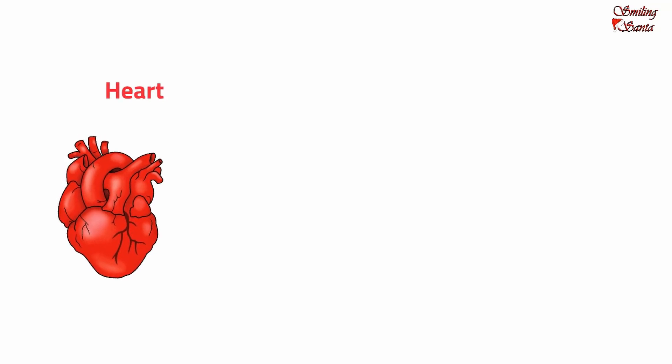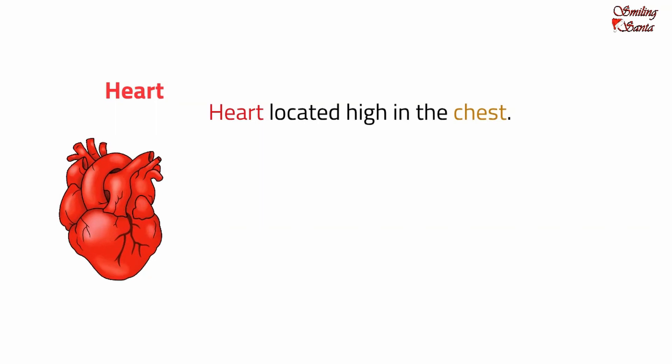There is a big pump-like organ in our body and it is made of very strong muscles. It is pear-shaped and slightly larger than our fist. Yes, I am talking about our heart. It is located high in the chest. Just like a water pump pumps water out, our heart constantly pumps blood to every part of the body.